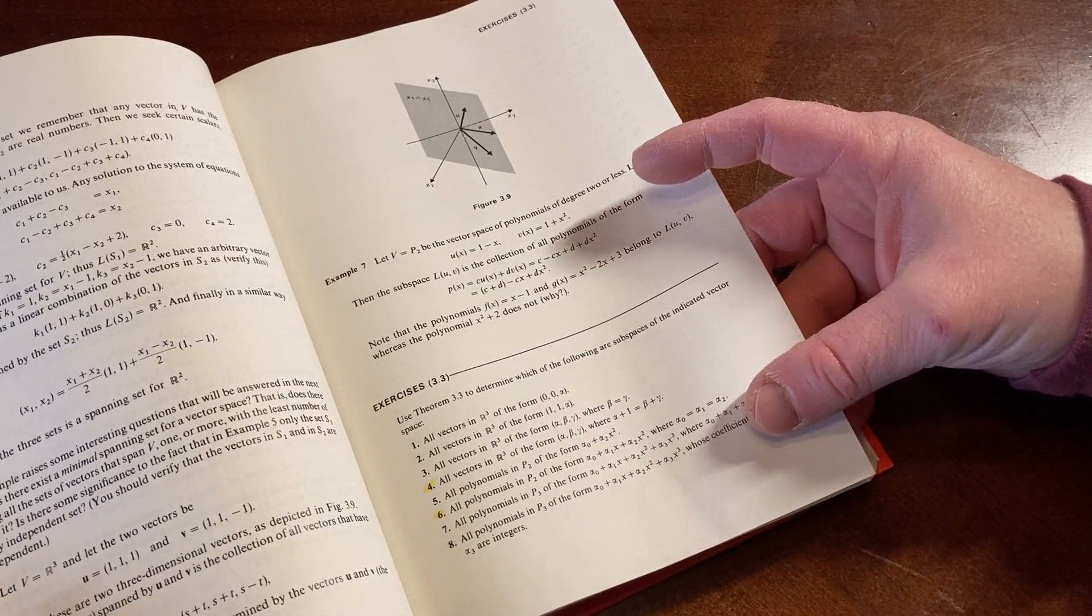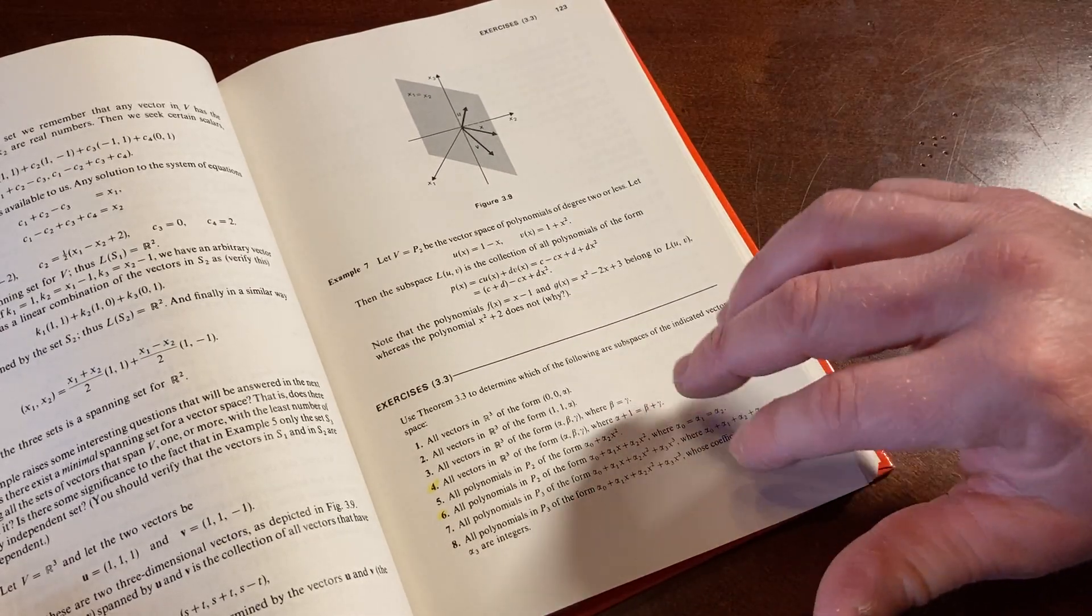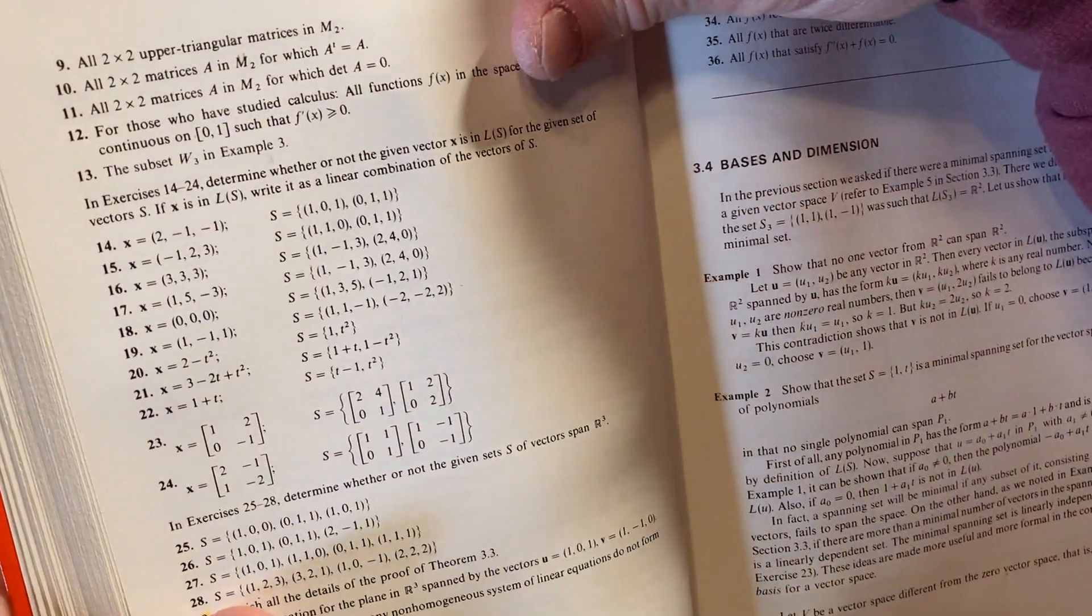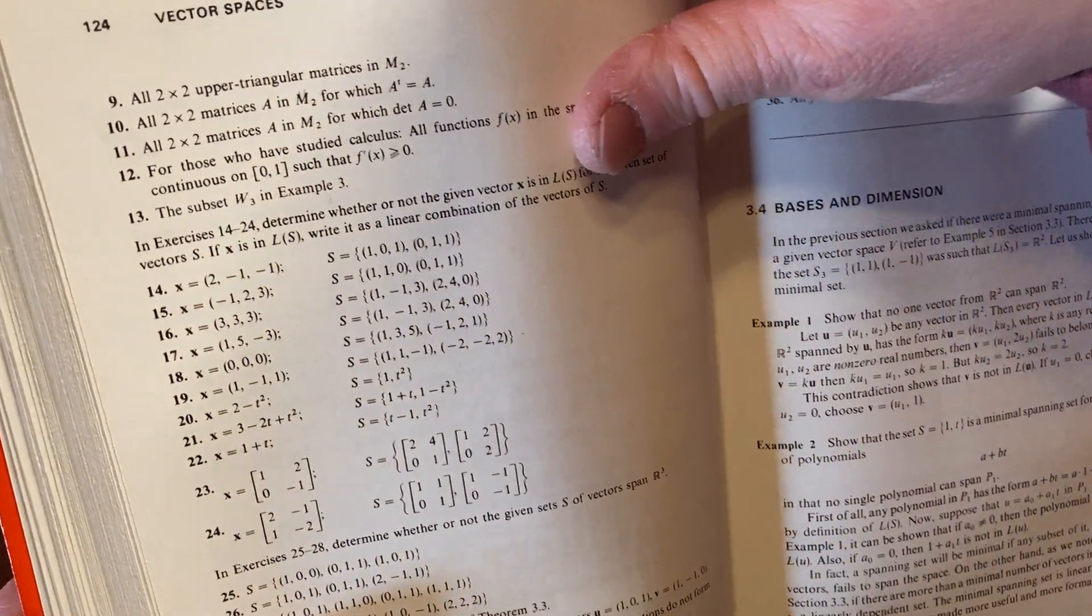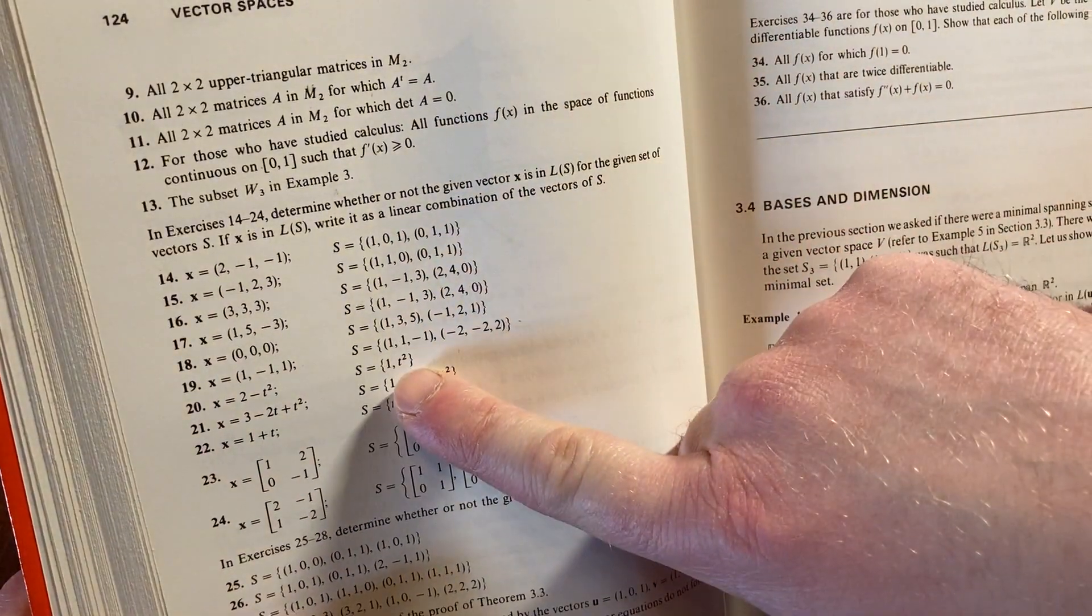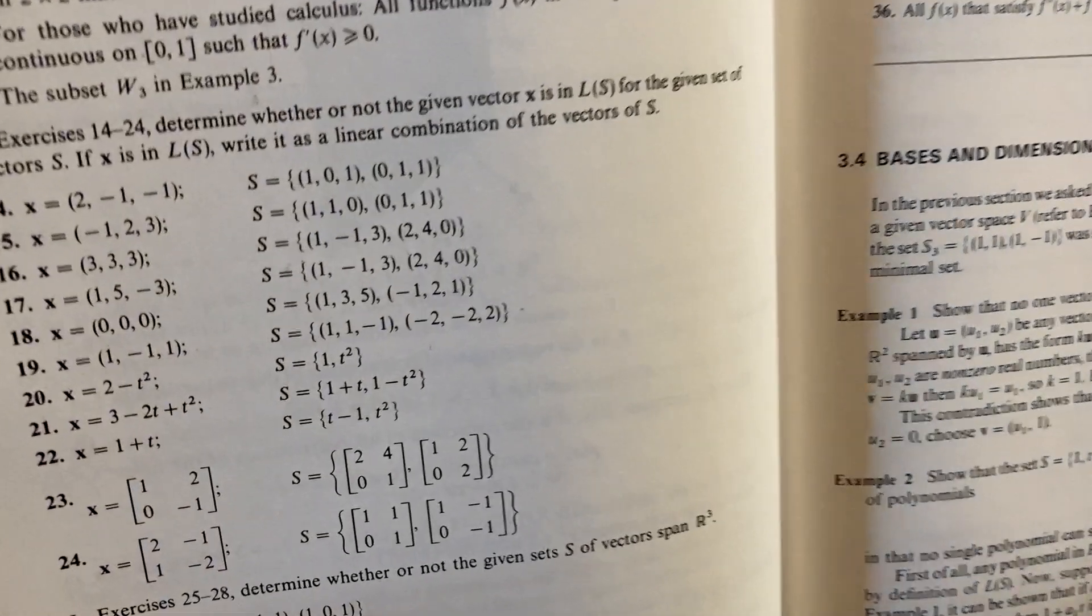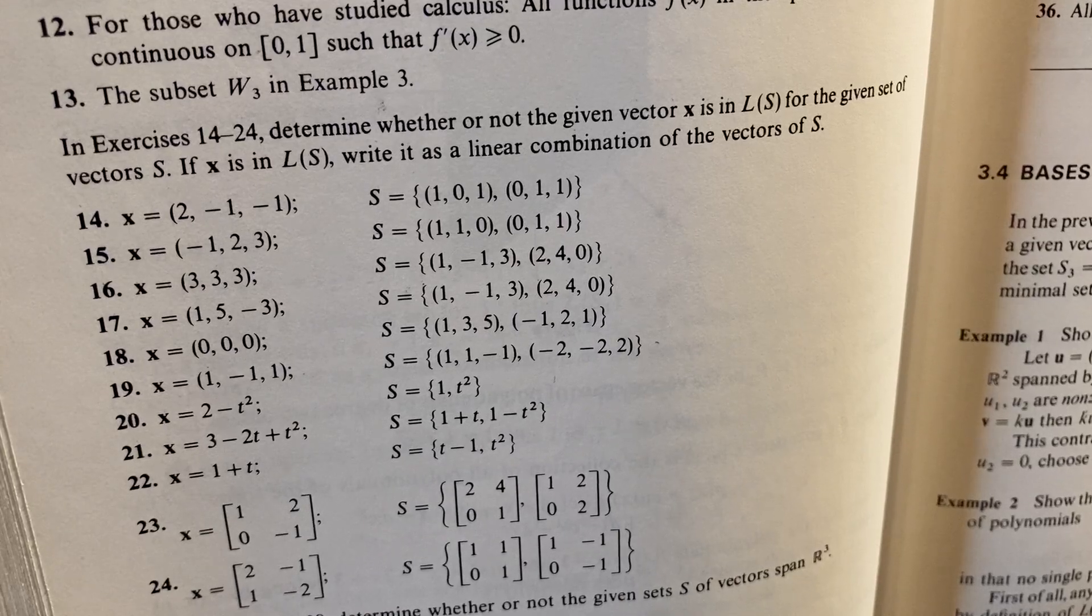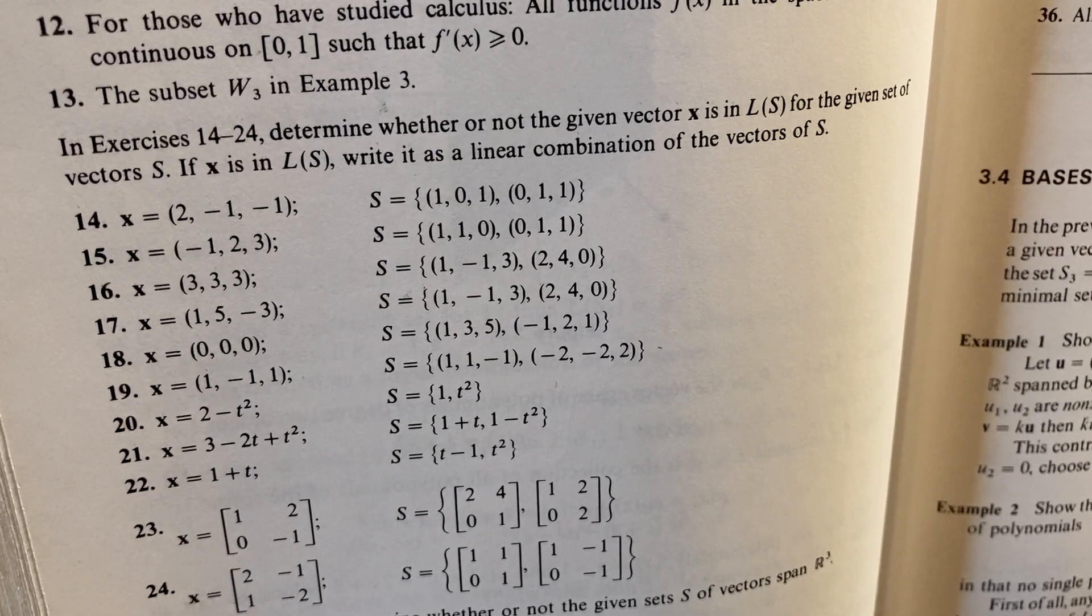It'd be great if you had answers to all of them, but the fact that you have answers to the odd ones would really help. And especially in examples like this because they can tell you like, oh, it's not a subspace because, so it really helps to have more than just a numerical answer. And that's what this book does have. It has more than just the numerical answers. Determine whether or not the given vector X is an L of S for the given set of vectors S. If it is, write it as a linear combination of the vectors of S. Cool.